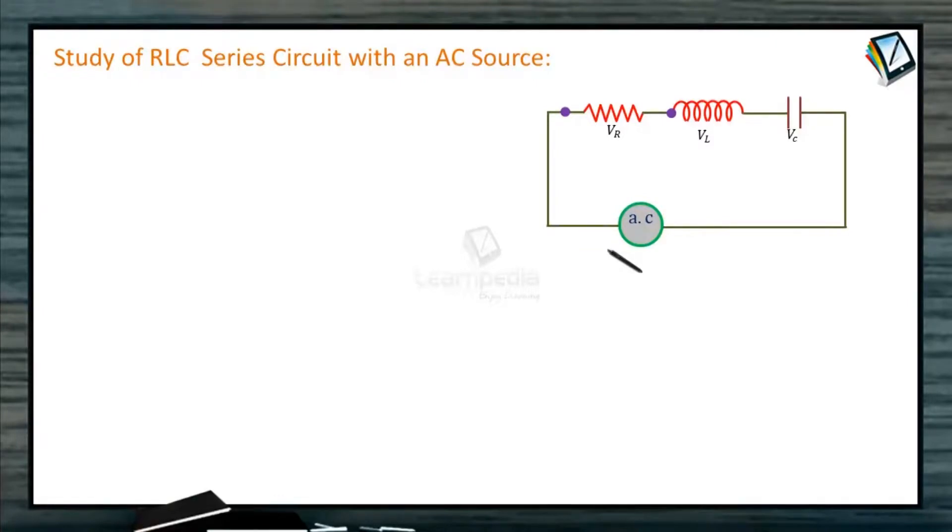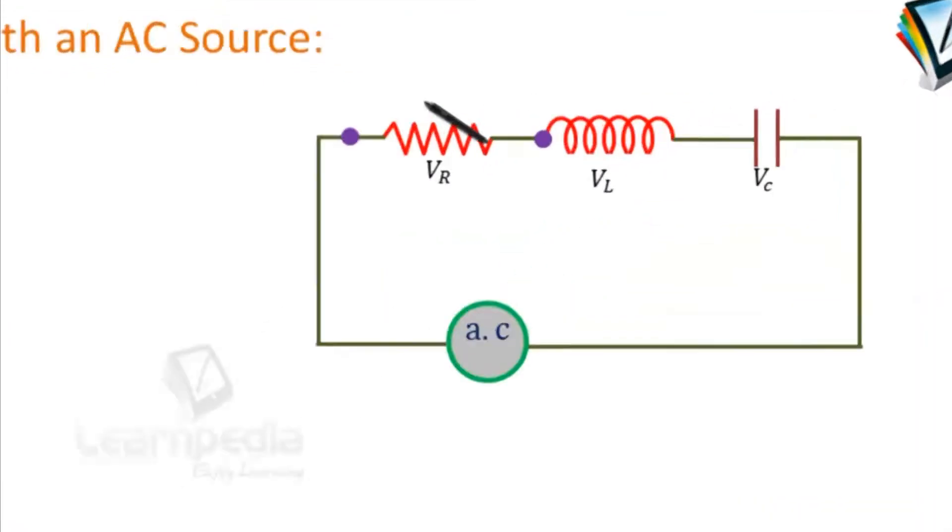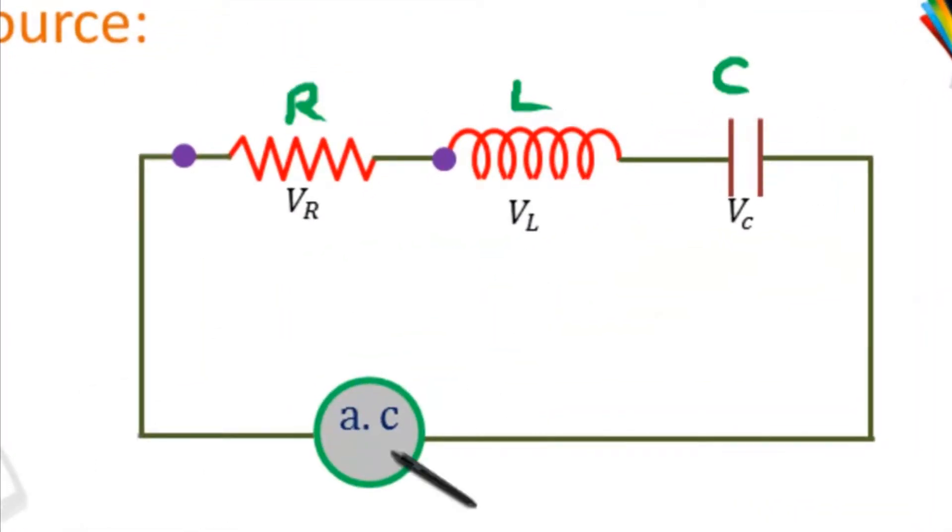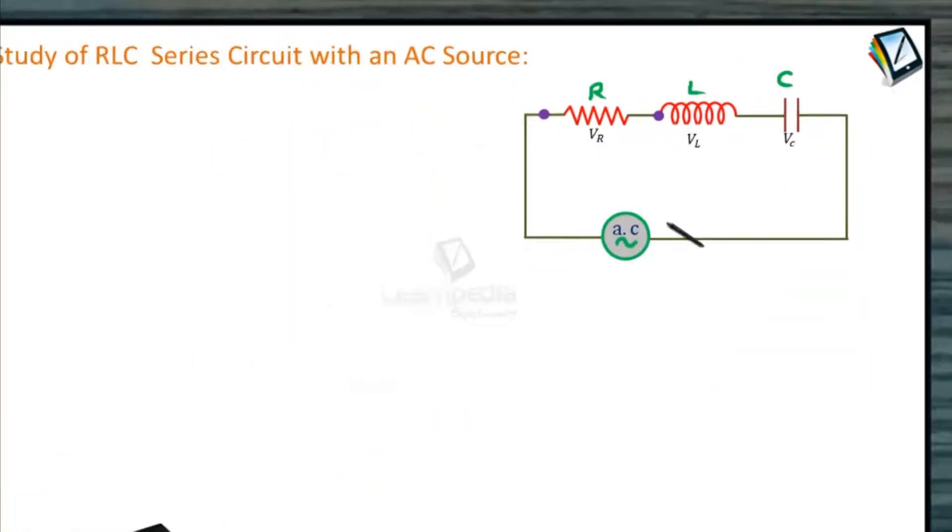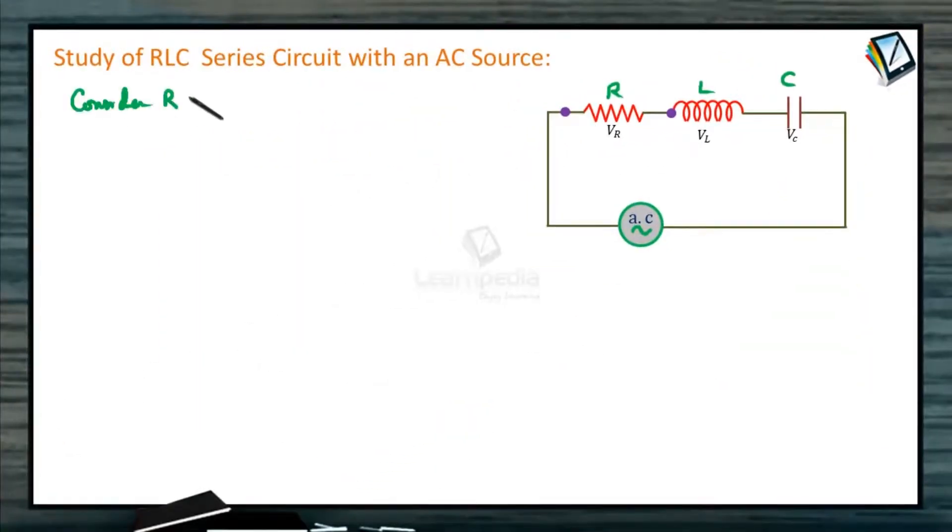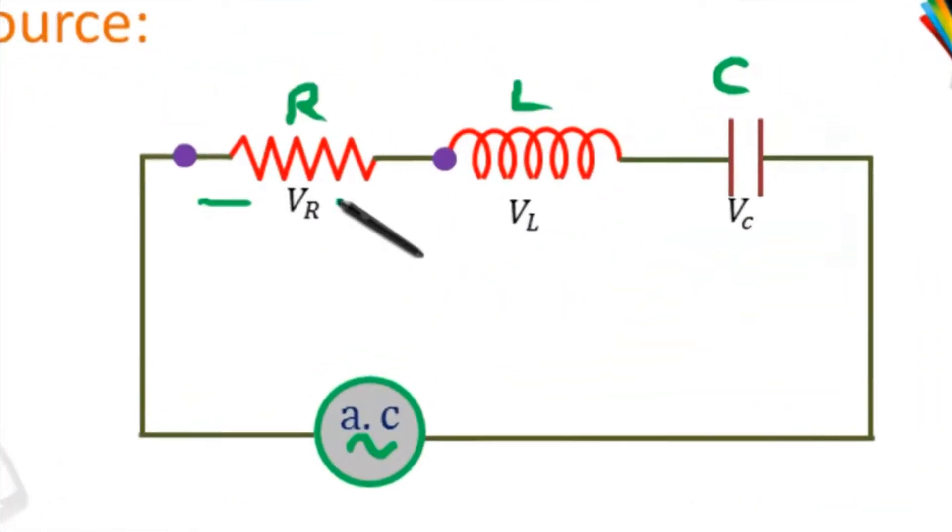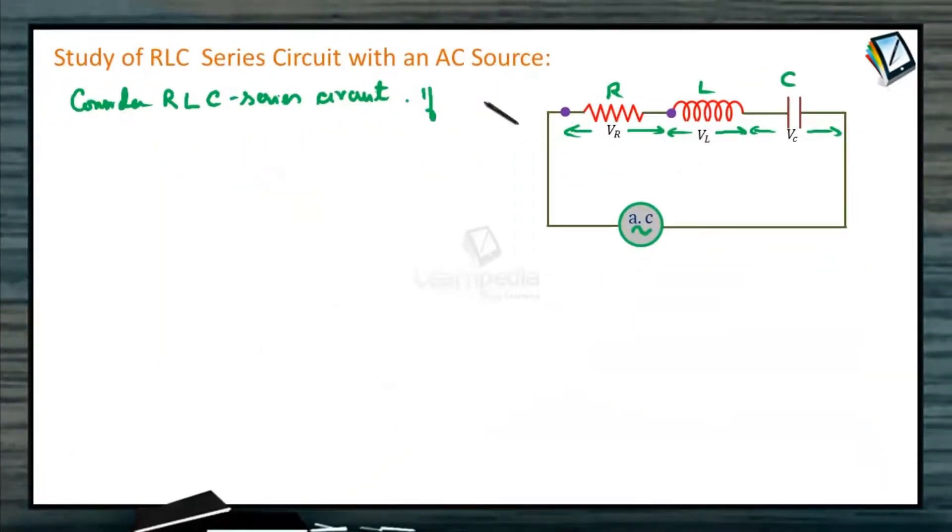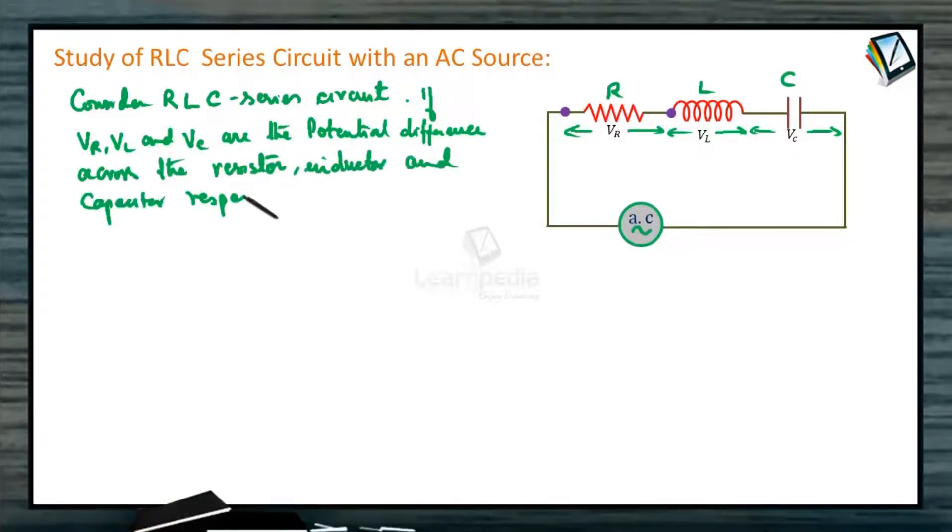Now first let us study about LCR or RLC series circuit with an AC source. Resistance is here, inductance and capacitor are connected across an AC source. Consider resistance, inductor, capacitor series circuit. The potential difference across the resistor is VR, across the inductor is VL, across the capacitor is VC. If VR, VL and VC are the potential difference across the resistor, inductor and capacitor respectively.